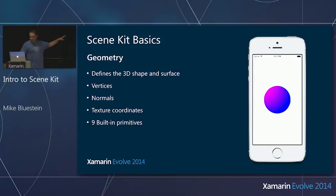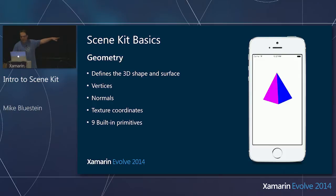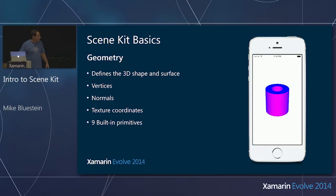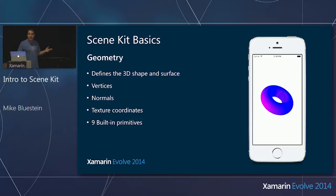You can see we have a sphere, a box, a plane, a pyramid, a cone, a tube, a capsule, a cylinder, and a torus. That's quite a bit.